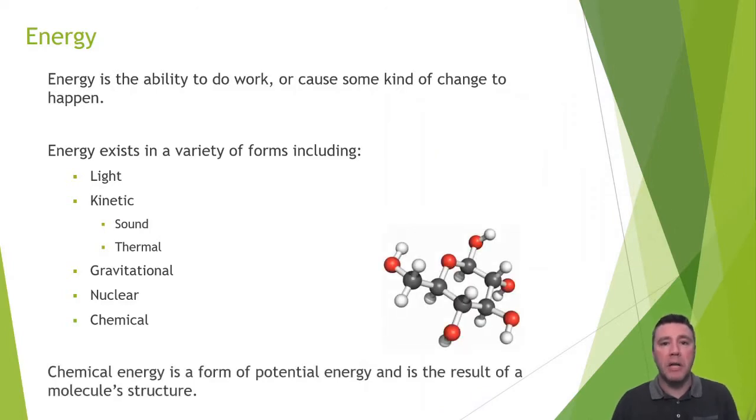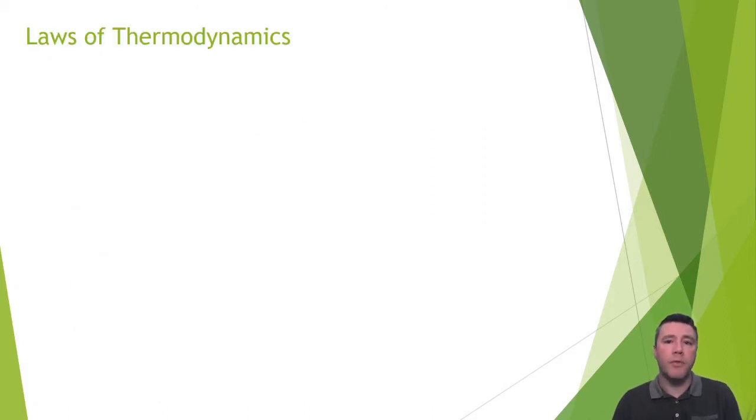Chemical energy is what plants and other producers form via photosynthesis. Chemical energy conversions are what all consumers rely on as molecules like glucose are broken down. A molecule is said to possess chemical energy, a form of potential energy, due to its structure. The study of the relationships between forms of energy and their transformations is called thermodynamics.